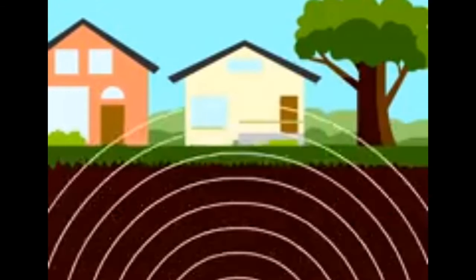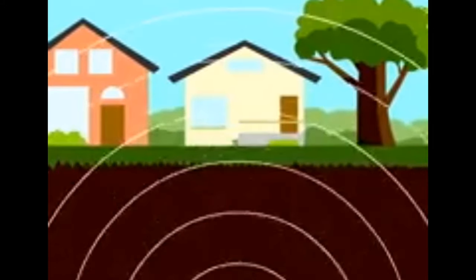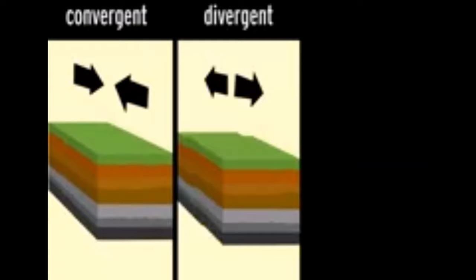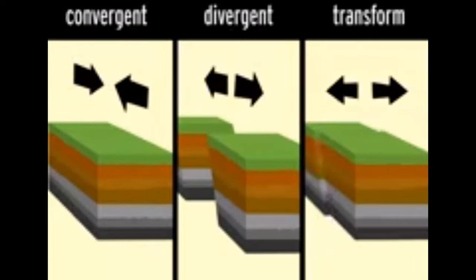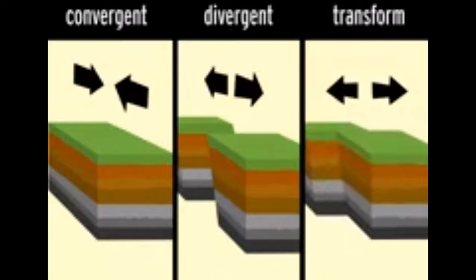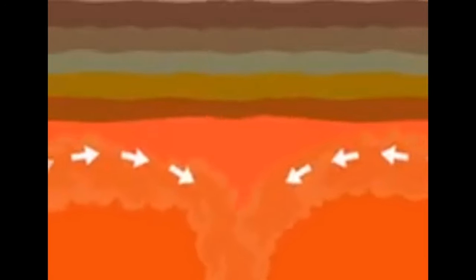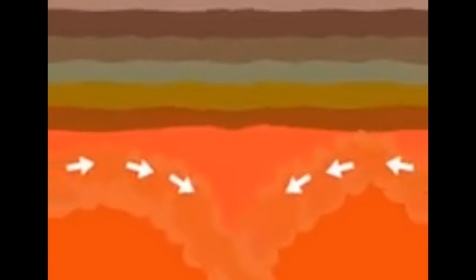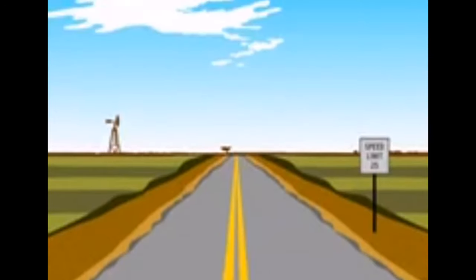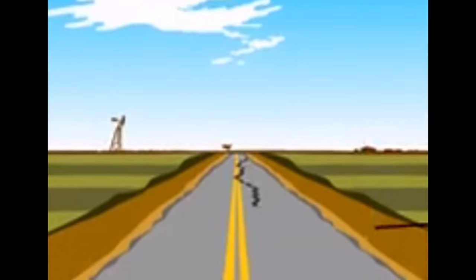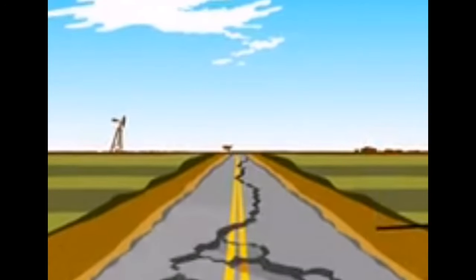Seismic activity is greatest along plate borders — at convergent boundaries where two plates collide, at divergent boundaries where they pull apart, and at transform boundaries where they slide past each other. At all three boundaries, there is enormous pressure on the Earth's crust, the topmost layer of the lithosphere. The pressure can build up for years; the longer it takes to release, the bigger the earthquake.